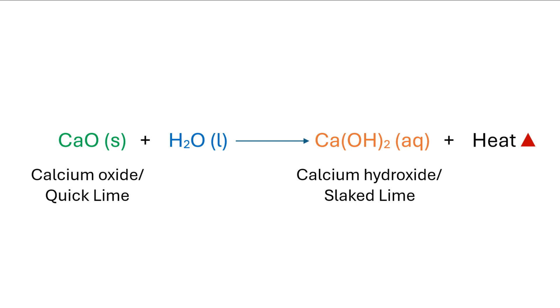The combination reaction that occurs can be summarized in the form of a chemical equation. Calcium oxide, with the formula CaO, reacts with water, H2O, to form calcium hydroxide, which has the formula Ca(OH)2. The reaction is exothermic and releases heat. Since only one product, calcium hydroxide, is formed, this reaction can be classified as a combination reaction.